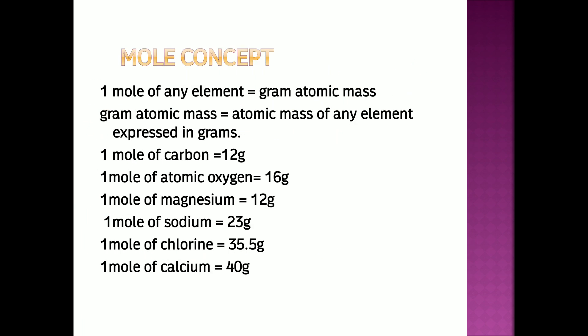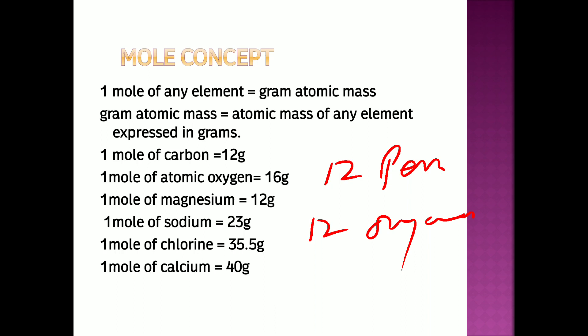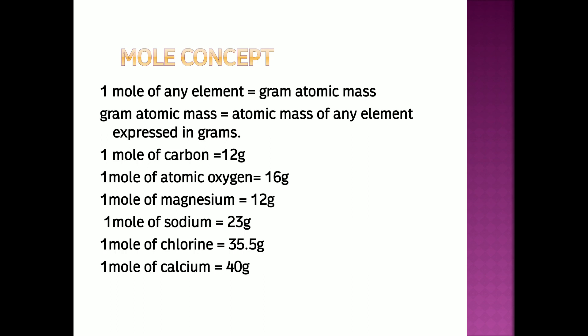Now let us talk about the relation of a mole with the mass of any particular substance. If I have 12 pens and 12 oranges, that means I have one dozen of both — the number is the same. But their mass cannot be the same; the mass will be different. Just like that, one mole is a quantity where the number is the same for any species — Avogadro's number — but the mass will be different.